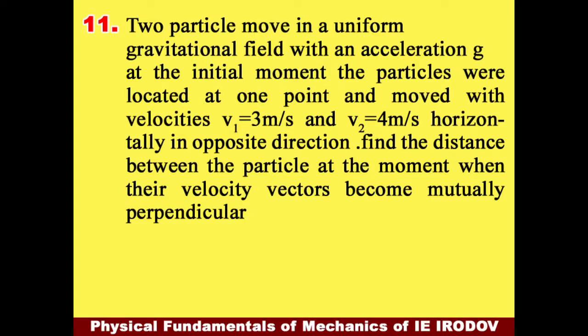Two particles move in uniform gravitational field with an acceleration G. At the initial moment the particles were located at one point and moved with velocity V1 equals to 3 meter per second and V2 equals to 4 meter per second horizontally in opposite directions. Find the distance between the particles at the moment when their velocity vectors becomes mutually perpendicular.